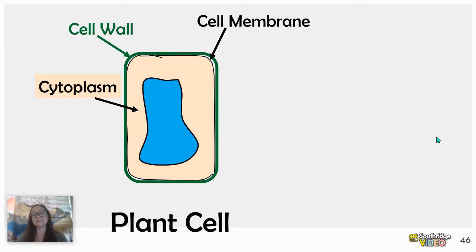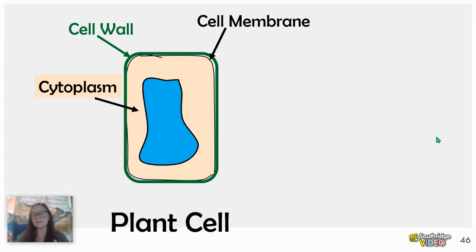Keep in mind that the plant cell still has a nucleus, rough ER, smooth ER, Golgi, mitochondria, chloroplast, etc. But right now we're focusing on water, so we're just going to show the large central vacuole.